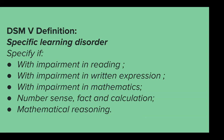Under specific learning disorder, they have to specify whether it's an impairment in reading — which is dyslexia — an impairment in written expression — dysgraphia — or an impairment with mathematics, which is what we call dyscalculia. In prior versions of the diagnostic manual it was called a math learning disorder. So if you're reading online about a 'math learning disorder,' that is what they called dyscalculia before the DSM-5. They further break it down into difficulty with number sense, fact and calculation, or with general mathematical reasoning — so there are different skill sets this can affect.